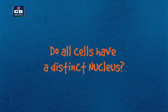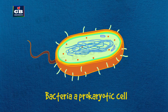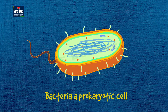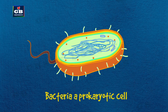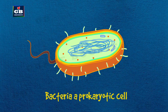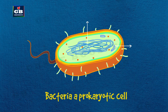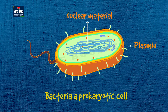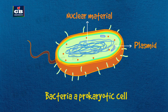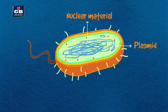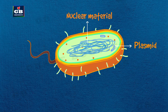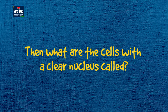Do all cells have a distinct nucleus? No. In certain single-celled organisms like bacteria, the nuclear membrane is absent. The nuclear region is undefined and contains only nucleic acids. Such a type of nucleus is called a nucleoid. The organisms whose cells lack a nuclear membrane are called prokaryotes.